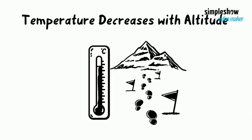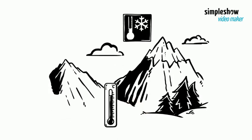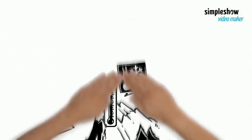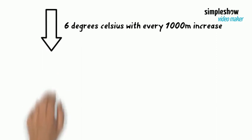Temperature decreases with altitude. Have you ever wondered why the top of a mountain is so much colder than at the foot? Temperature generally decreases by 6 degrees Celsius with every 1000 meters increase in altitude.